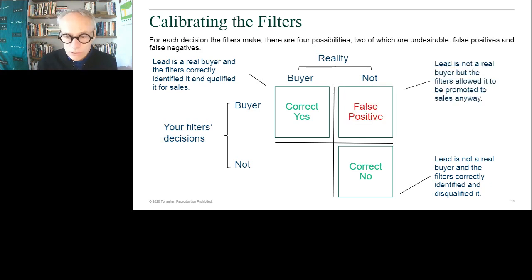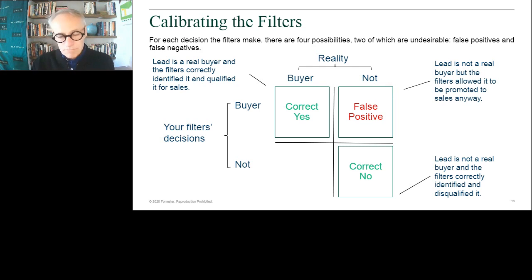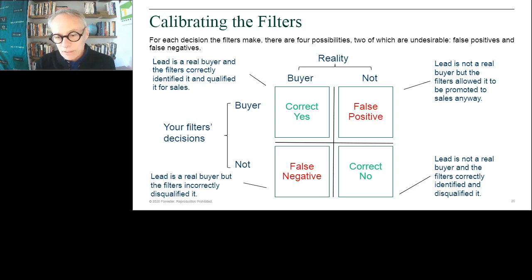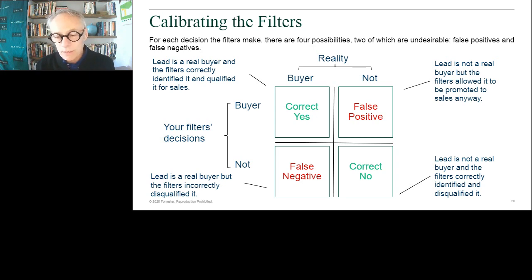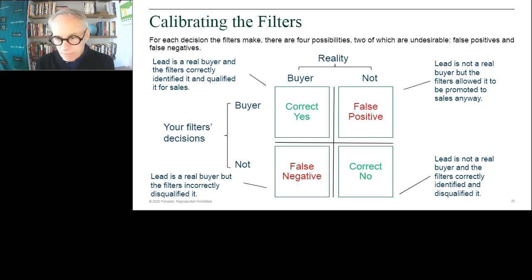A false positive is when a lead is not really a buyer but your filter says it is — the classic case of a highly scored lead getting passed to the SDR or sales team but not being a real buyer. The other bad answer is a false negative — when a lead does not make it through your filters. The tele team either never reaches out or never gets through, and even though that person is part of a buying process, they don't make it to sales. You don't get to compete for that business.